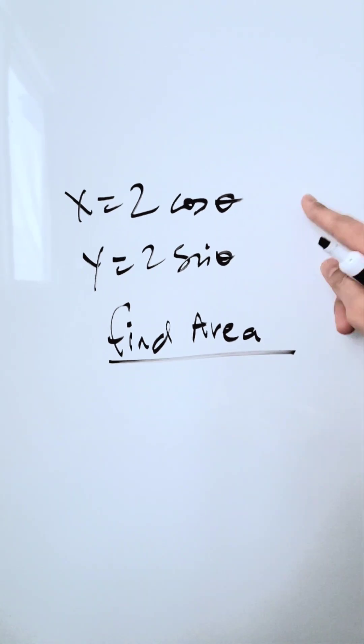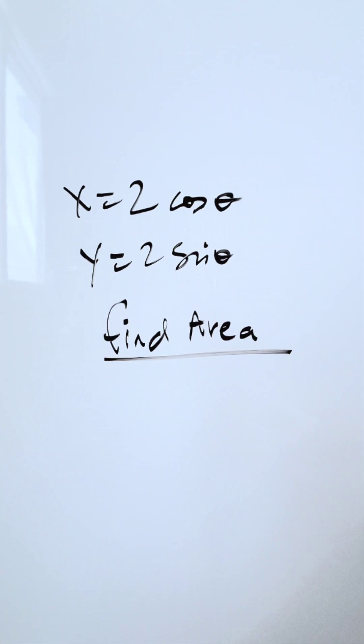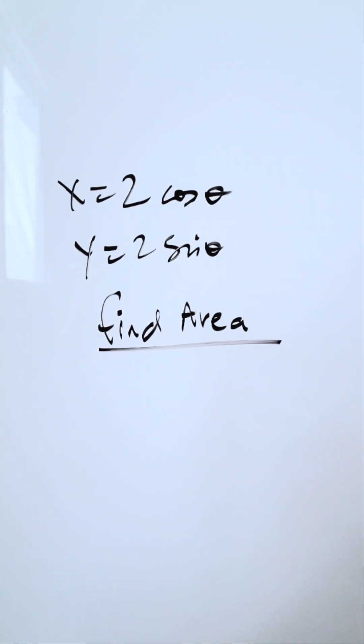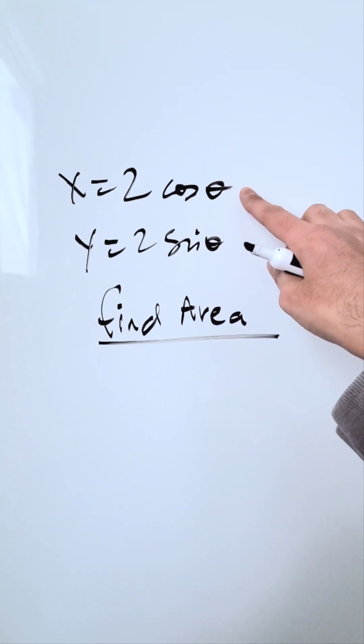We are given two parametric equations: x equals 2 cosine theta and y equals 2 sine theta. We have to find the area represented by these equations. Why are these parametric equations? Because you have a third variable, a parameter theta.